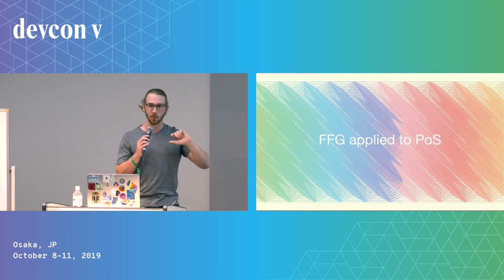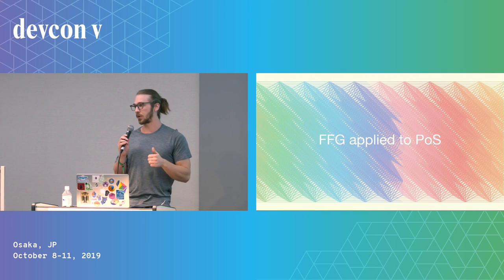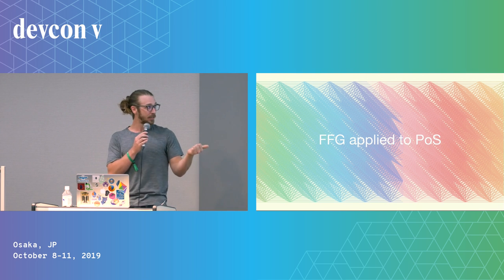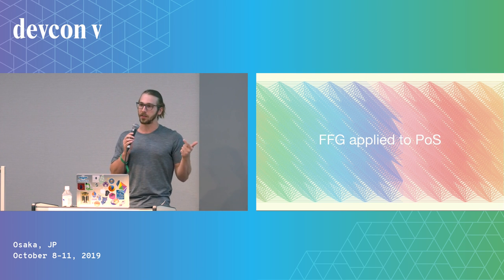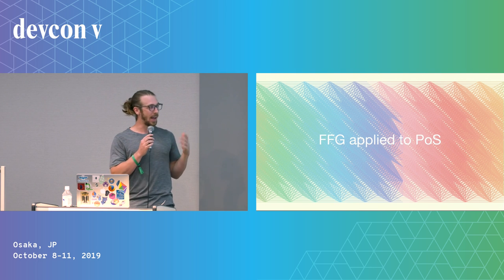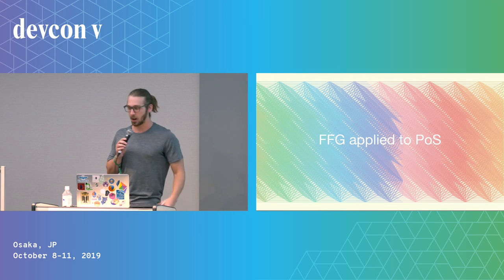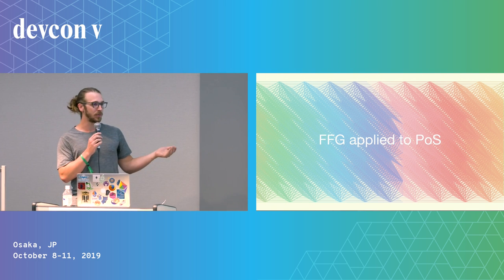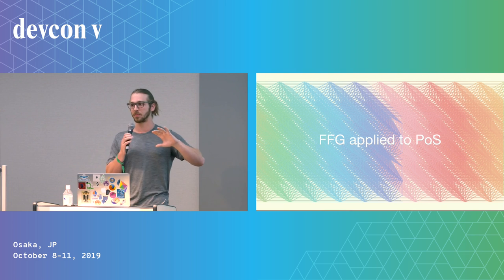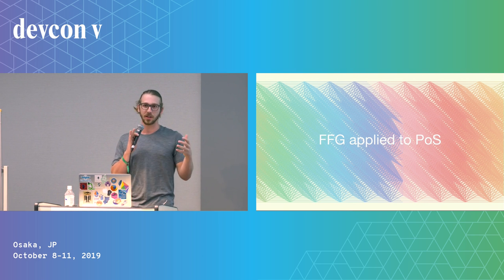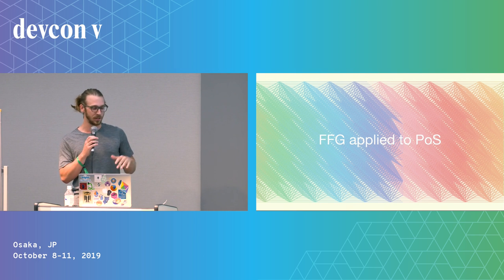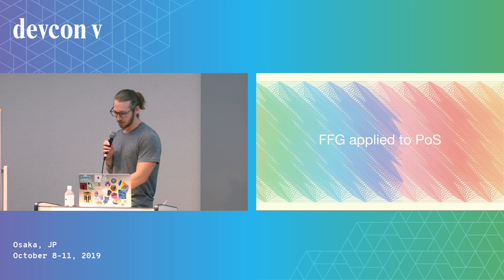We're going to start off today by looking at some of the core building blocks of consensus: that's the Casper FFG protocol, the LMD Ghost fork choice, randomness, and BLS signatures. After that, we'll take a short break, maybe take some questions, and then we'll dive into some of the mechanics and concrete instantiation of the protocol — the actual state transition and validators and things built on top of some of these components.